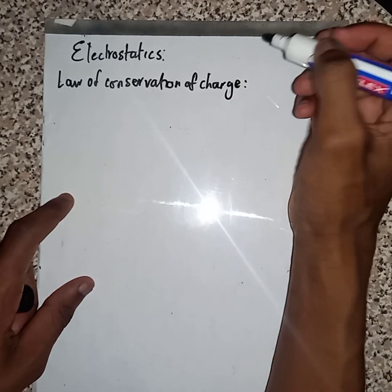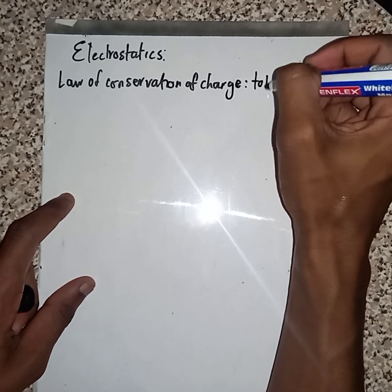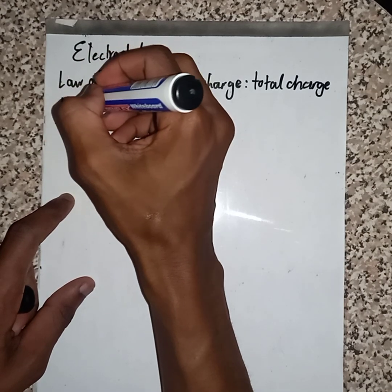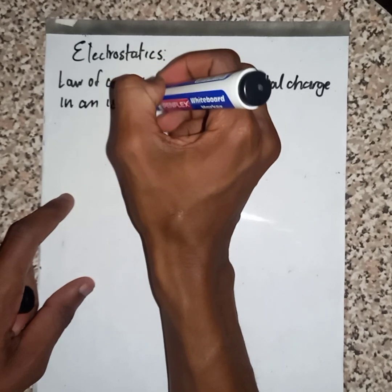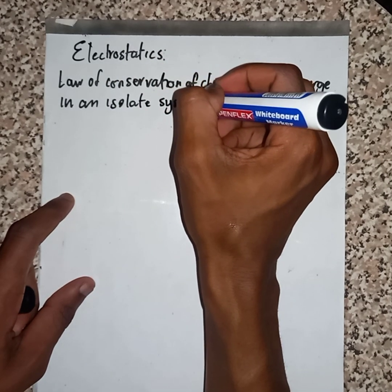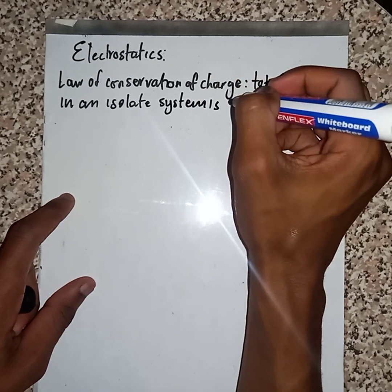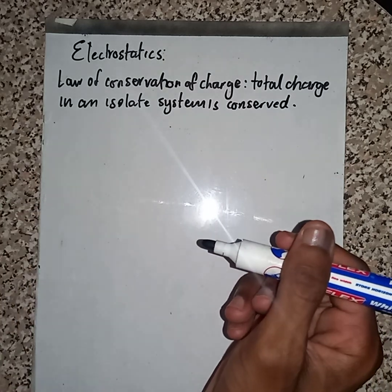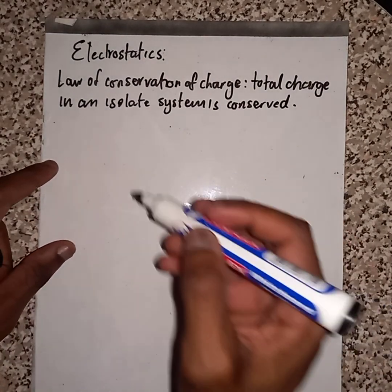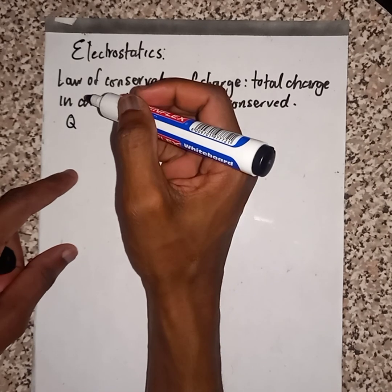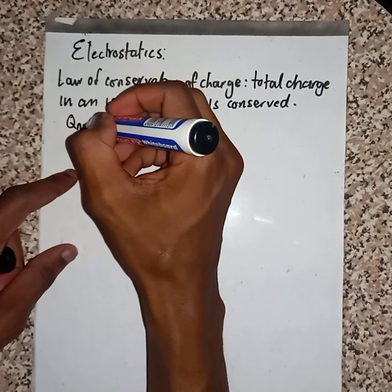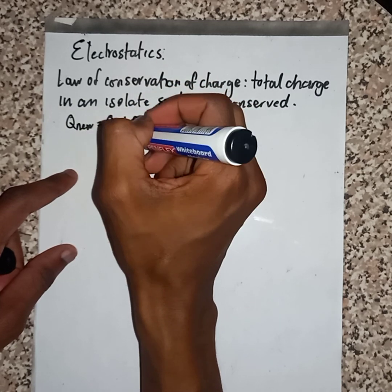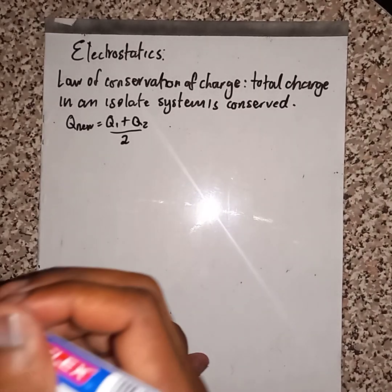It states the total charge in an isolated system. And now, which formula are we going to use? It is Q_new equals Q1 plus Q2 divided by 2.